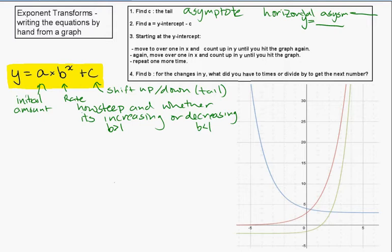So let's take a look at our graphs that are given and try to write the equations for these. We'll look at the red one first. The first thing I'm going to do is actually find the tail, or find the horizontal asymptote. You can see here that the graph is leveling off to 0, so that tells me C is equal to 0.